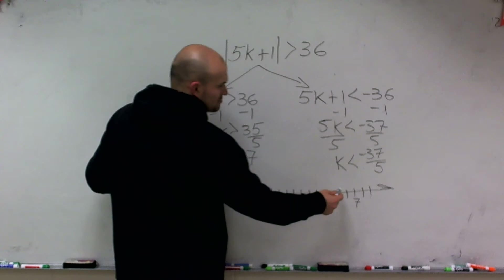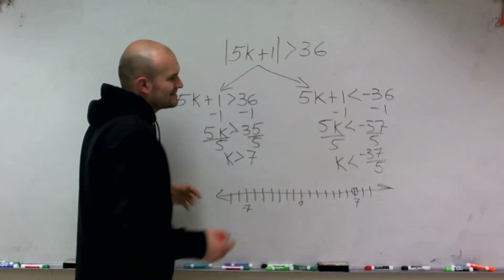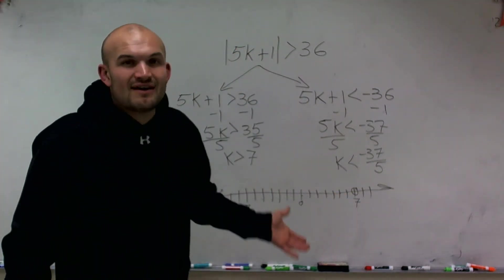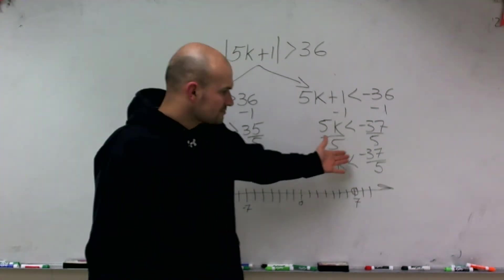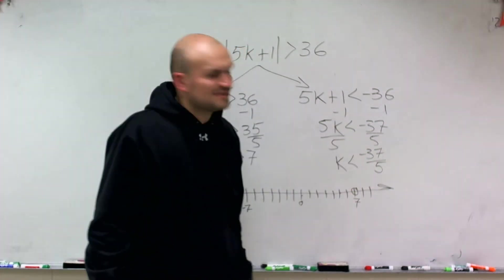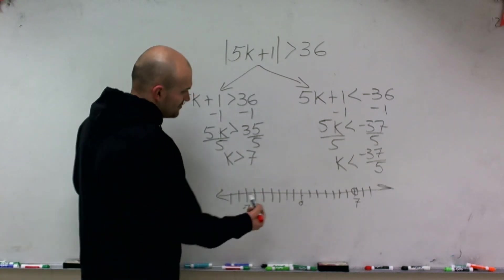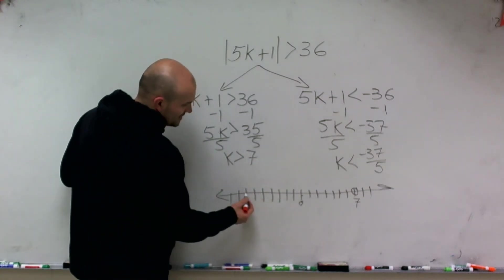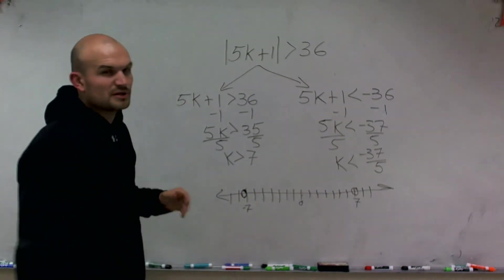So therefore, I'm going to first plot 7, and then I need to say, where's negative 37 divided by 5? Well, you can kind of convert this over to a mixed number, which would be negative 7 and 2 fifths. Therefore, you're going to get a little bit larger than negative 7, or sorry, a little bit smaller than negative 7, but not exactly over to 8. So all this estimated is going to be right in there.